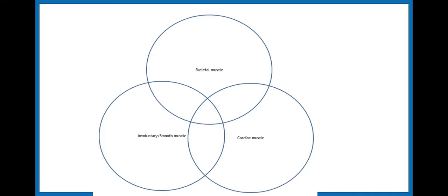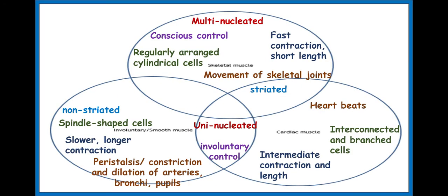I'd advise you to pause the video and try to draw out this Venn diagram and fill in the blanks. This will help you determine the similarities and differences between all three muscle types, which you really need to be aware of. Pause it, have a go, and then the answers are coming up. That covers the differences and similarities between all three types of muscle cells.